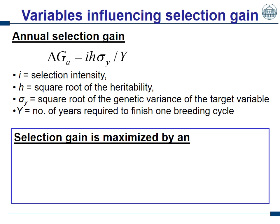The breeder's equation is, in detail: the selection intensity multiplied by the square root of the heritability, multiplied by the square root of the variance of the target trait — for instance, grain yield — and divided by the number of years required to finish one breeding cycle. This is the annual selection gain. The absolute selection gain would be the same formula without the division by the number of years.